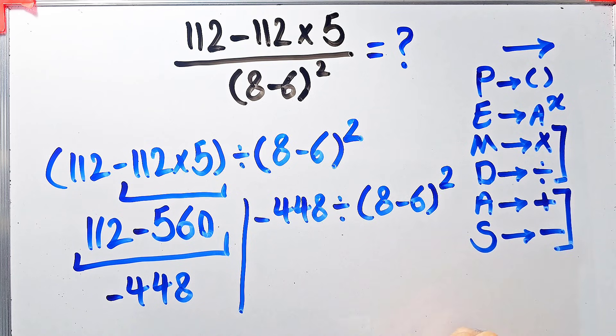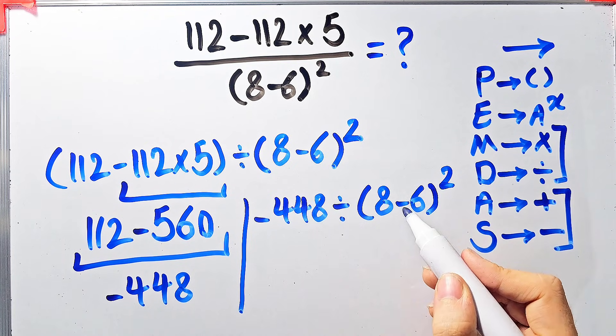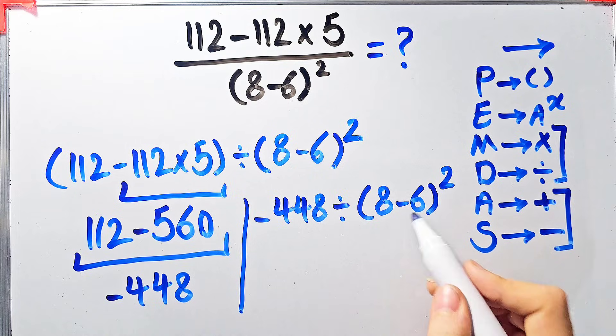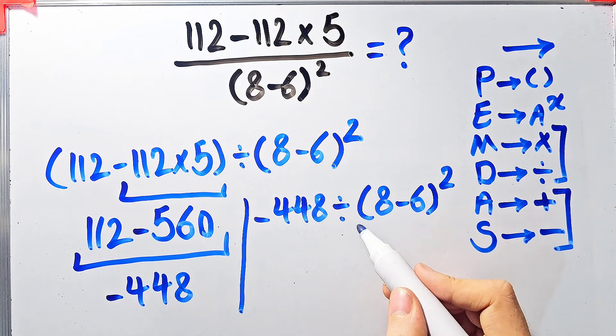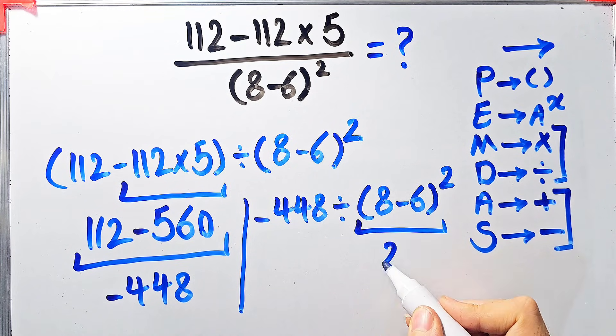Now we have division, parentheses, subtraction, and exponent. In this step we simplify the parentheses: 8 minus 6 equals 2.